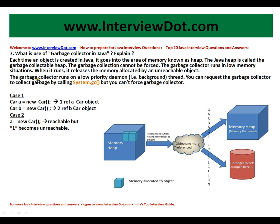The garbage collector runs in a low memory situation. When it runs, it releases the memory allocated by an unreachable object. The garbage collector runs on a low-priority daemon — that means a background thread. You can request the garbage collector to collect garbage by calling the system.gc() method, but you cannot force the garbage collector.